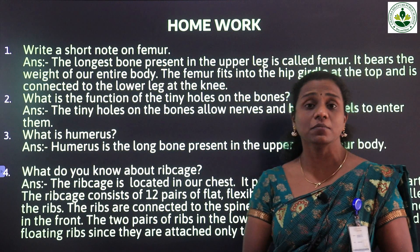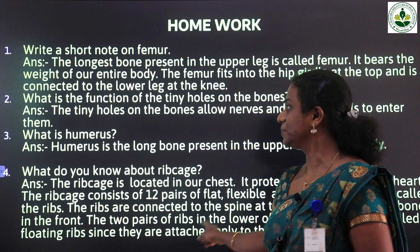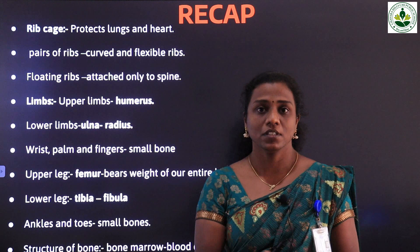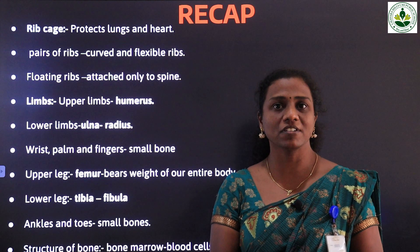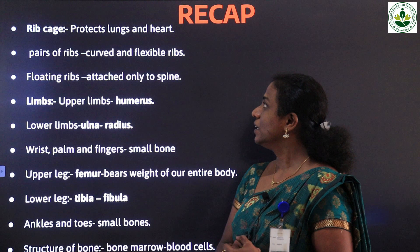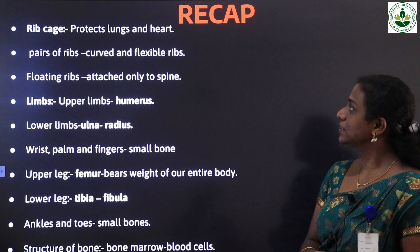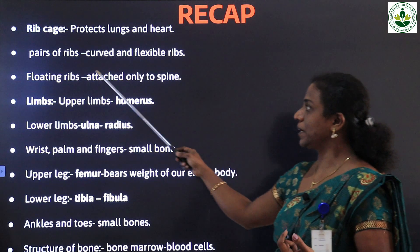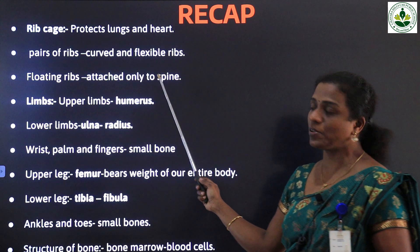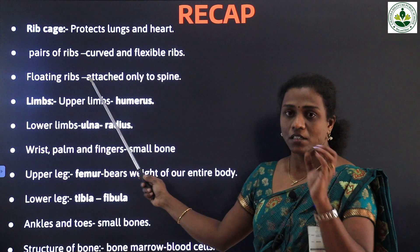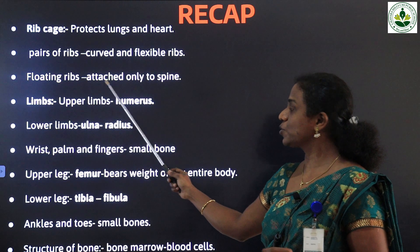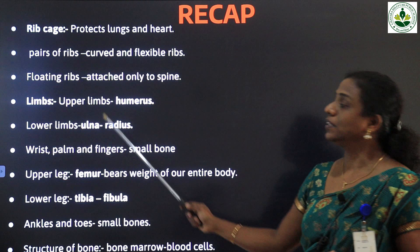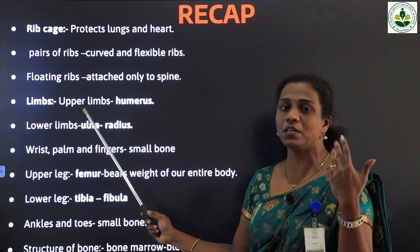If any mistake is there, correct it. So last class we studied about the ribcage, so we can make a quick revision of the last session. The ribcage protects the lungs and heart — that is our internal organs. Then it comes to pairs of ribs — curved and flexible ribs. Then some ribs have the name floating ribs; two pairs of ribs are floating ribs, attached only to the spine.